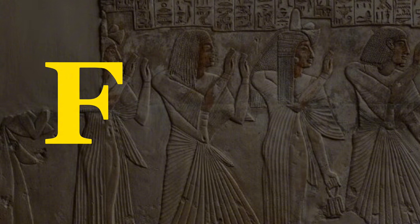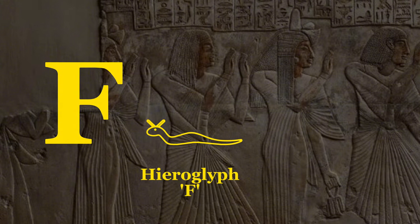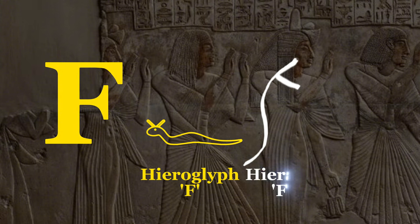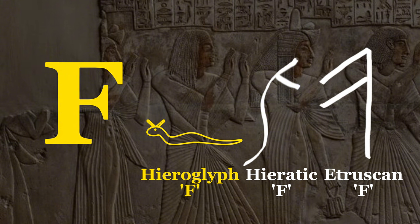As for the letter F, on initial inspection it seems unrelated to the horned viper hieroglyph it originates from. However, in hieratic the serpent was stood up with its horns emphasised, producing the same letter and sound found in the Egyptian, Etruscan and modern Latin alphabet.